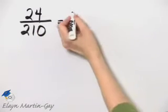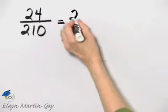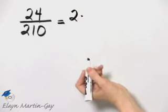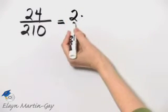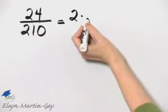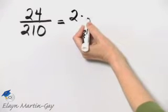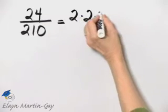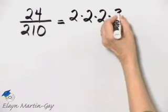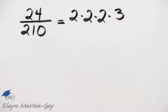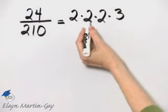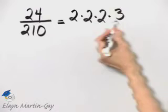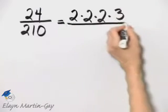24 is, let's see, 2 times 12, and 12 is not a prime but 2 is a prime. So let's work on 12 now. 12 is 4 times 3, and I know 4 is 2 times 2, and then 3. Now you double check me, but this is 2 times 2 times 2, which is 8, and 8 times 3, that is 24.